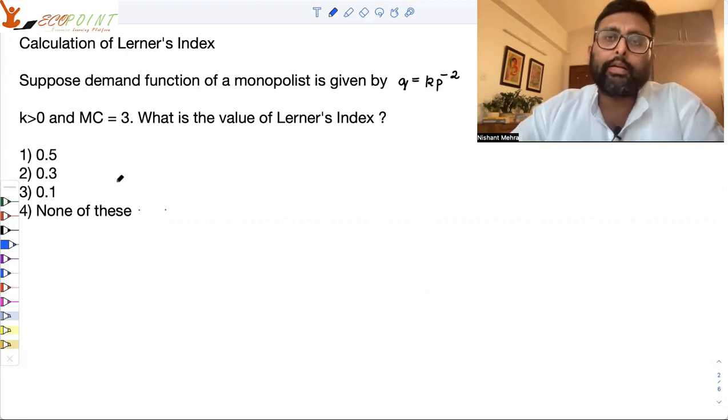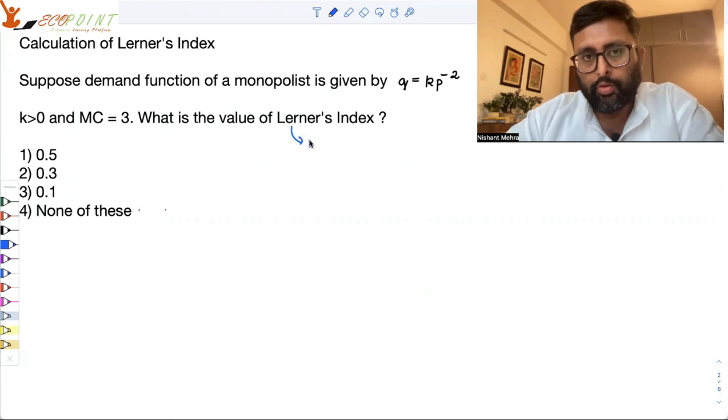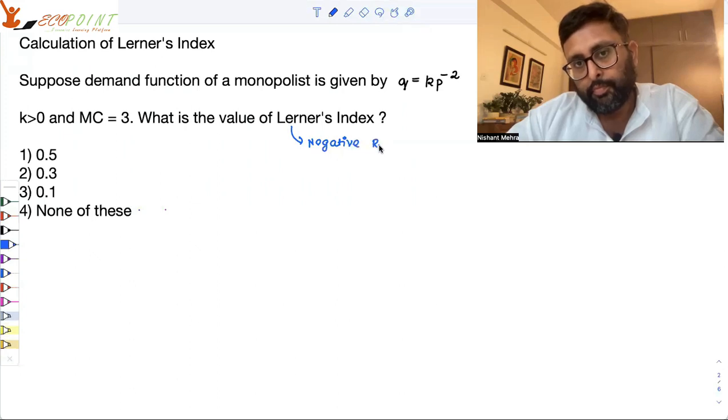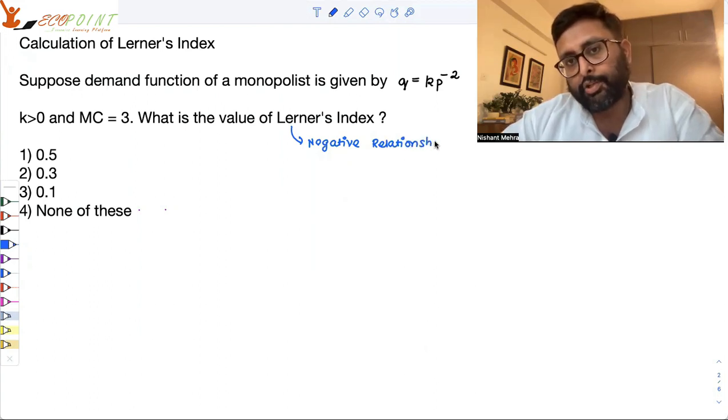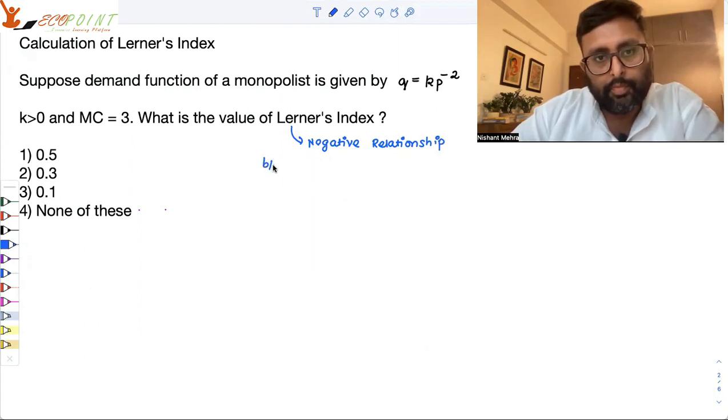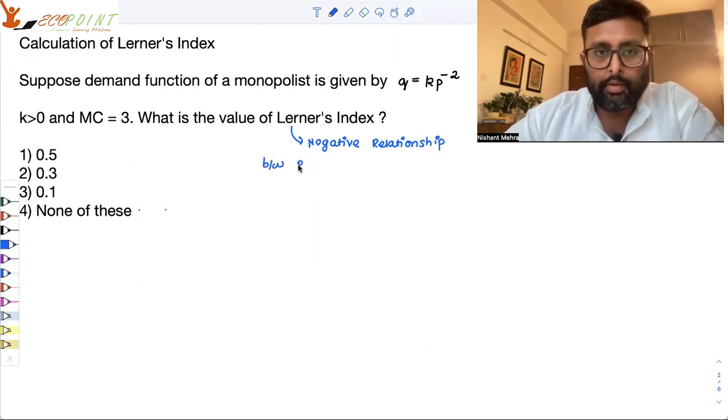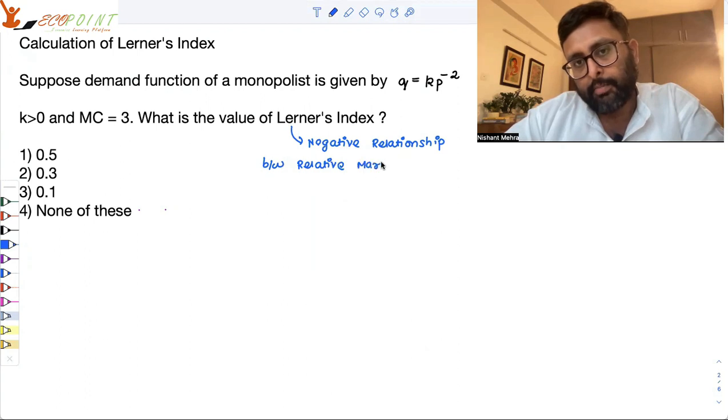This is simple. You should know that Lerner's Index shows you the negative relationship between the relative markup and the elasticity of demand.